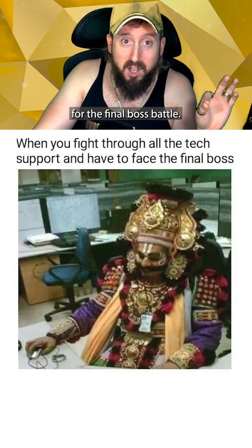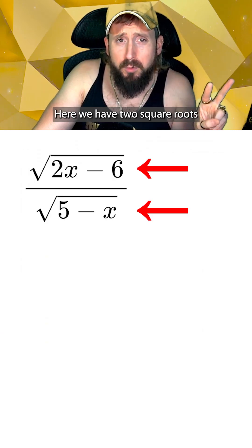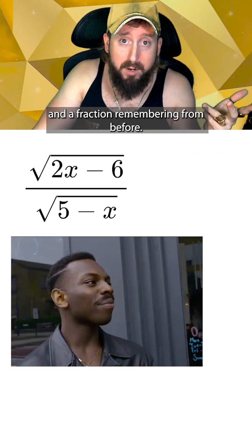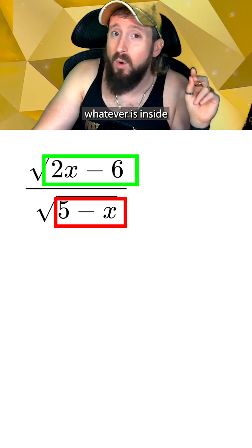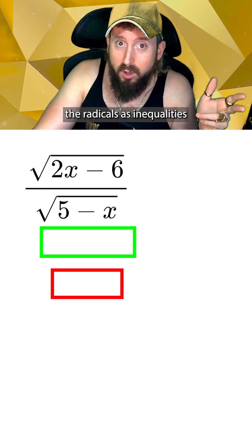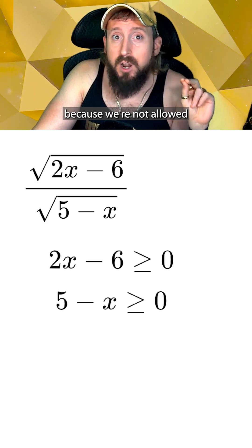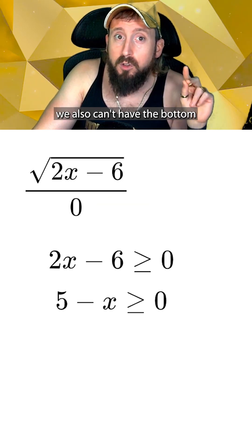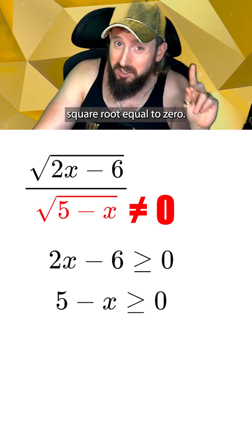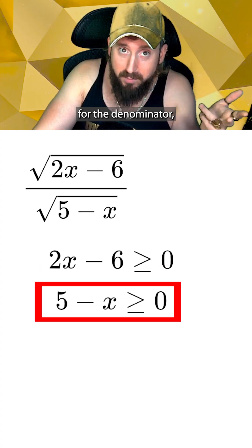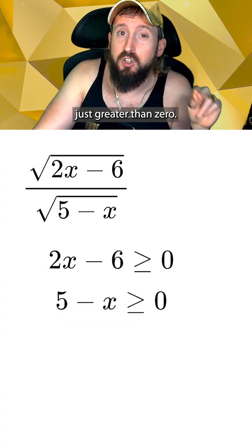Now let's put it all together for the final boss battle. Here we have two square roots and a fraction. Remembering from before, we know we can write whatever is inside the radicals as inequalities that are greater than or equal to zero. The exception here is that because we're not allowed to divide by zero, we also can't have the bottom square root equal to zero. So when writing the inequality for the denominator, we're going to have it as being just greater than zero.